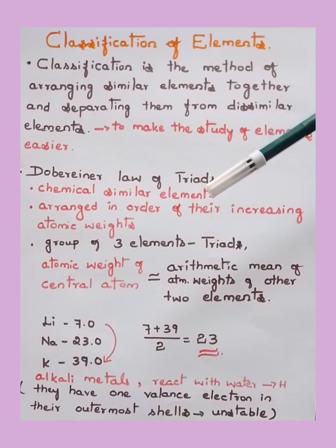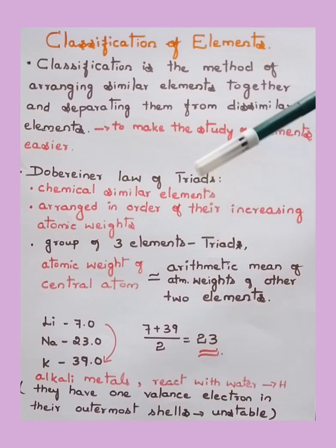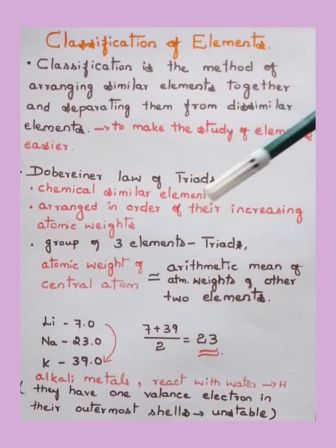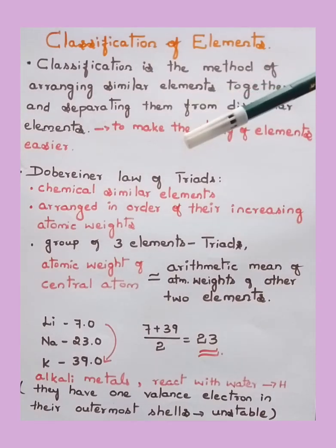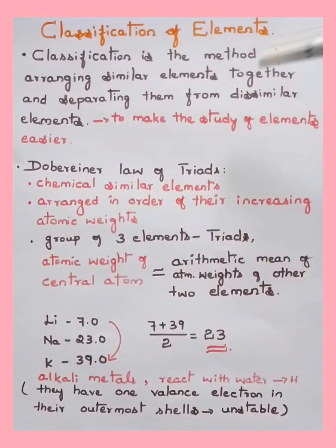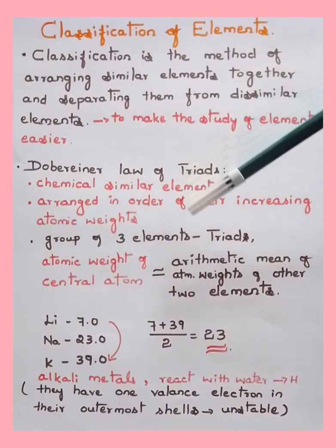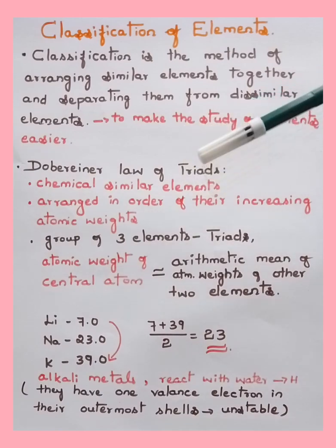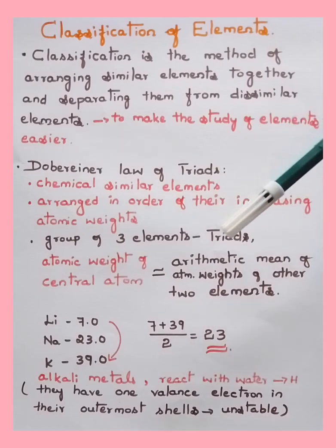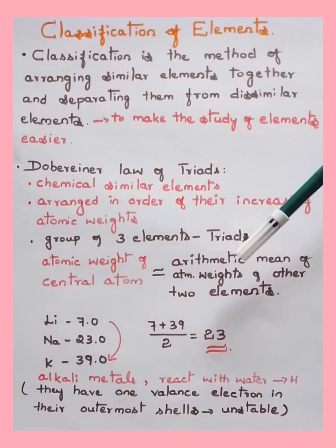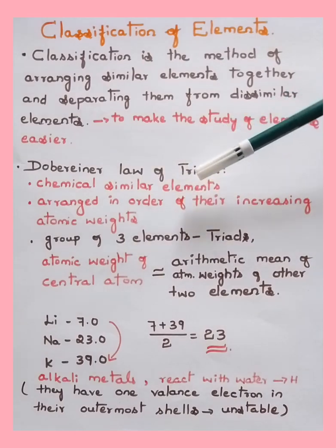The modern periodic table is given by scientists. We will first look into a few important laws mentioned in the syllabus. The first is Dobereiner's Law of Triads. Different scientists tried to classify elements based on similar and dissimilar properties. Dobereiner was the one who first attempted to classify elements in the 1870s, choosing groups of elements with similar properties.